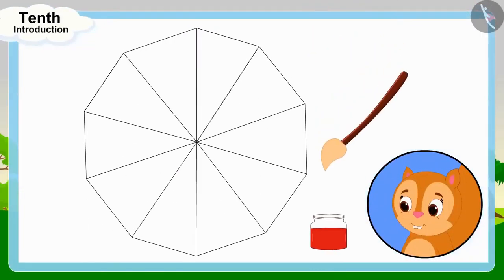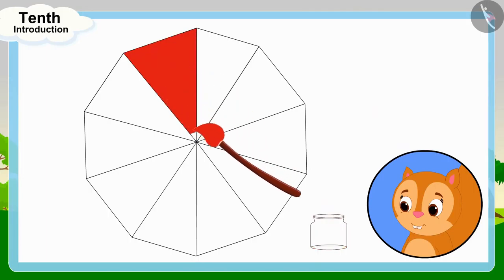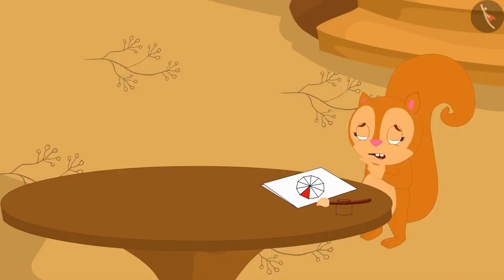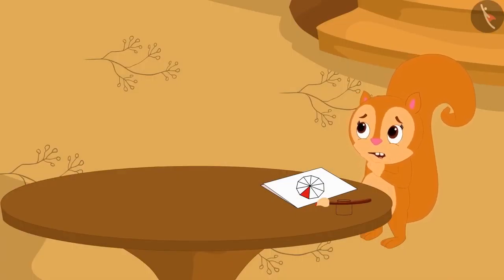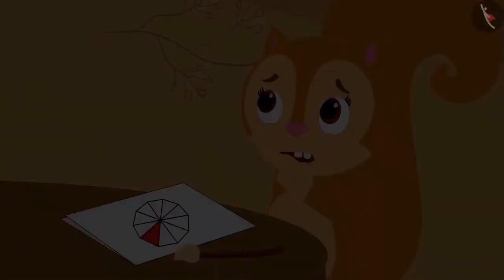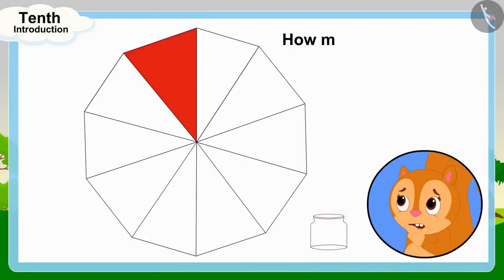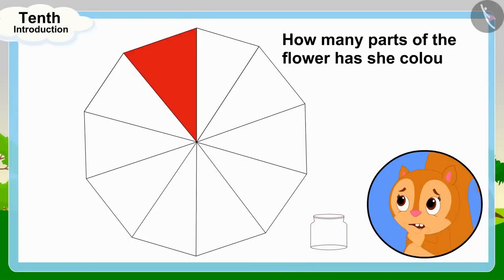She started coloring the petals of the flower with red color. Oh no, I have only painted one petal so far and the color is over. Chanda thought nervously. Now Chanda is thinking: how many parts of the flower has she colored?